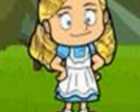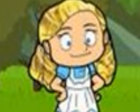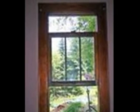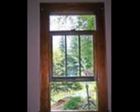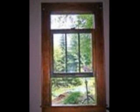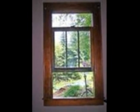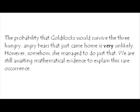'Now, see here,' roared Papa Bear. Goldilocks woke up with a start, and her eyes nearly popped out of her head. But before the bears could demand a proper explanation, Goldilocks was out of bed, out the window, and on her way home. 'Who was that girl?' asked Baby Bear. 'I have no idea,' said Mama Bear, 'but I hope we never see her again.' The probability that Goldilocks would survive the three hungry, angry bears that just came home is very unlikely. However, somehow, she managed to do just that. We are still awaiting the mathematical evidence to explain this rare occurrence. The end.